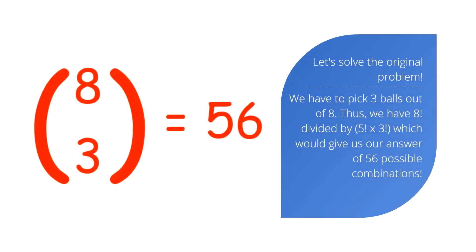Let's solve the original problem. We have to pick 3 balls out of 8. This is equal to 8 choose 3, so n is equal to 8 and r is equal to 3. Applying this in our formula, we have 8 factorial divided by 5 factorial times 3 factorial, which gives us our answer of 56 possible combinations.